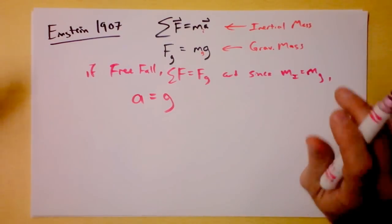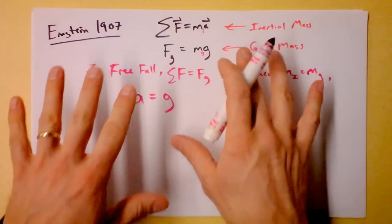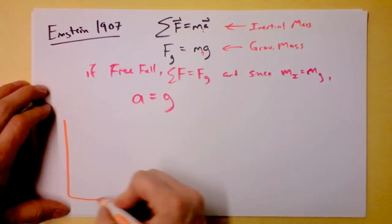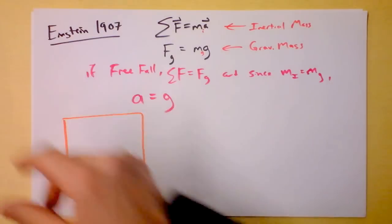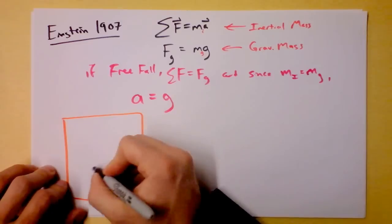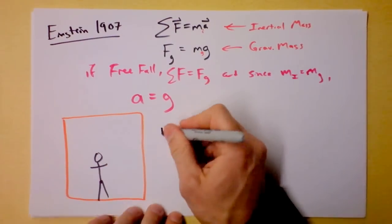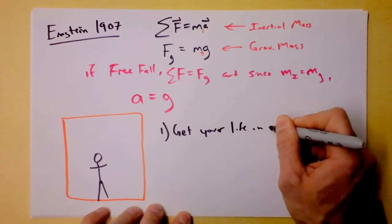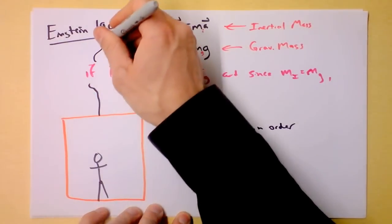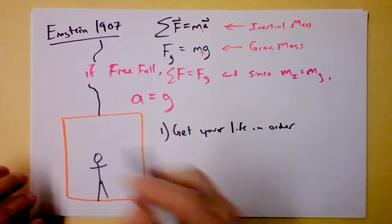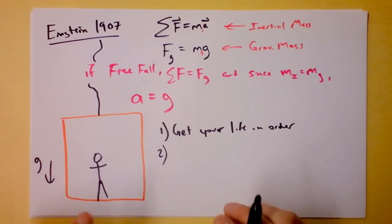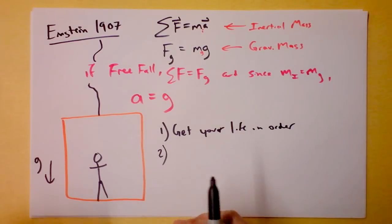Einstein eventually wrote some crazy stuff. This is a great foundation, but now consider: if you're in an elevator and the cable breaks, you are accelerating downward at g. You might wonder about the amazing physics you're experiencing, because it's kind of like you're not feeling gravity.